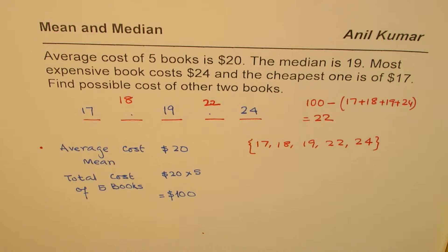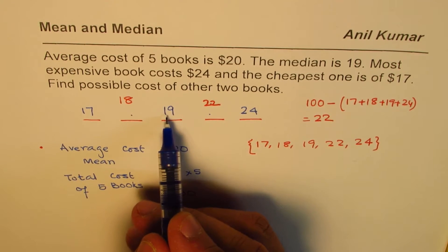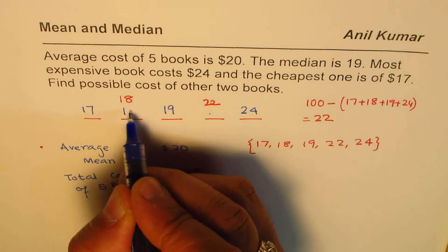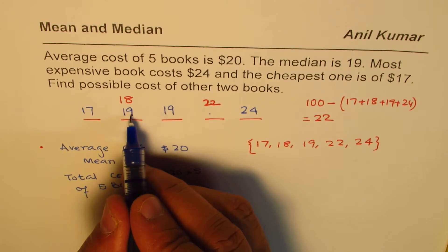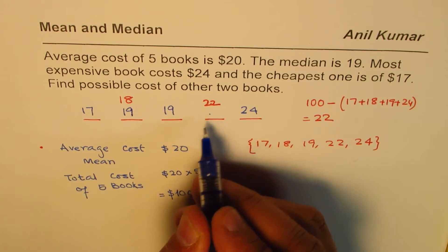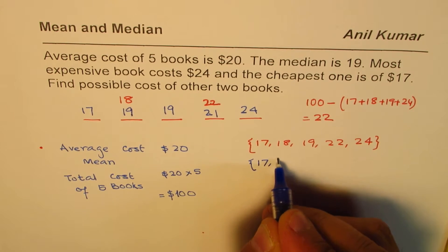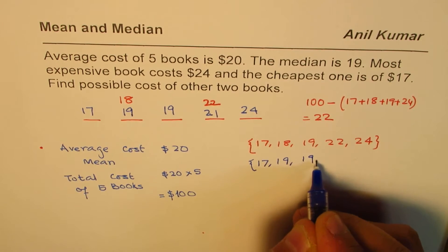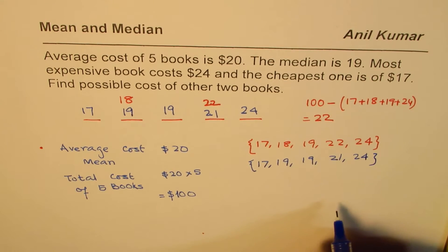But what we could do is, we could take this value as 19 also. So we could also take this value as 19. In that case, since I've taken this one more, this should be one less. So this should be 21. So we could get another combination, which is 17, 19, 19, 21, 24. You get an idea, right?